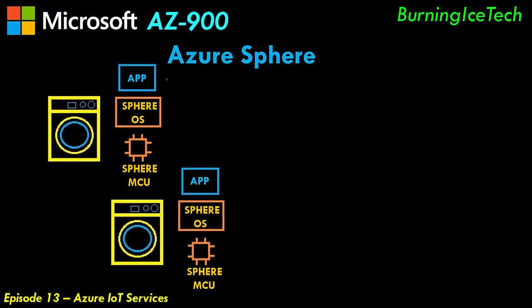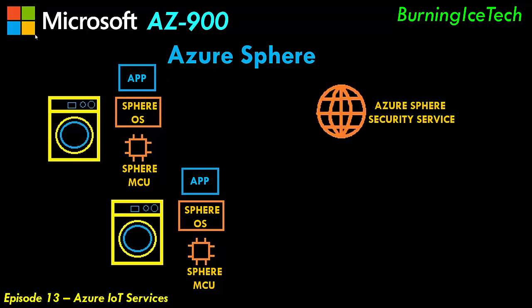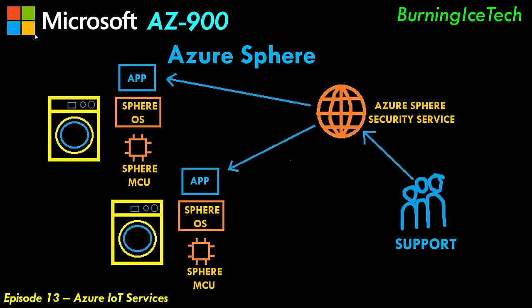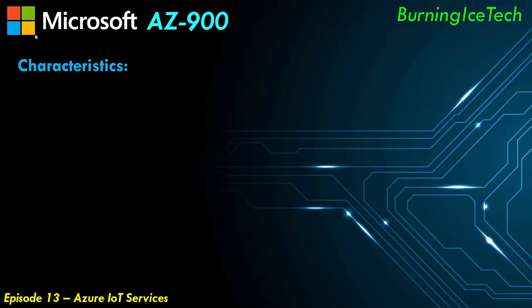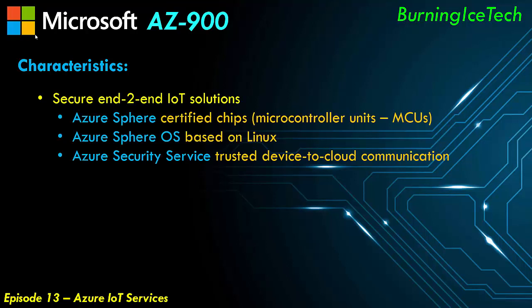The third thing that Azure Sphere delivers is the Azure Sphere security service. This service is used for secure communication between the cloud and the devices themselves, so that your support teams can apply updates to your applications through that service, and Microsoft can apply updates to the operating system through Azure Sphere security service. All of that is done to achieve one thing: to build secure end-to-end IoT solutions by creating standardized certified chips, a secure operating system, and a secure channel to communicate between devices and the cloud. Azure Sphere is a set of tools for secure IoT solutions.